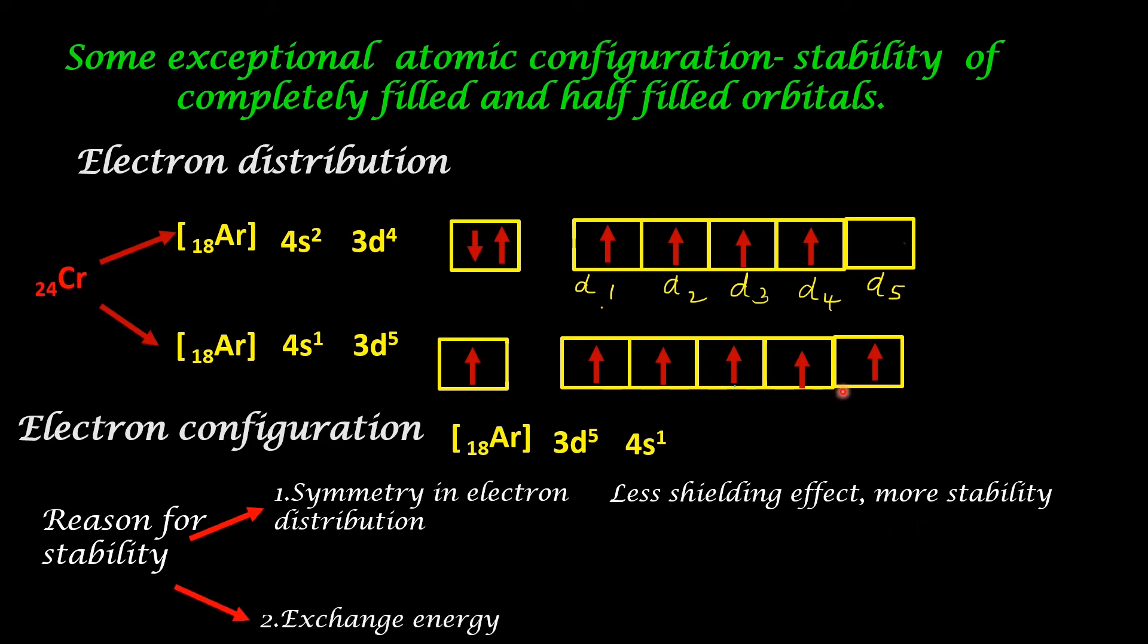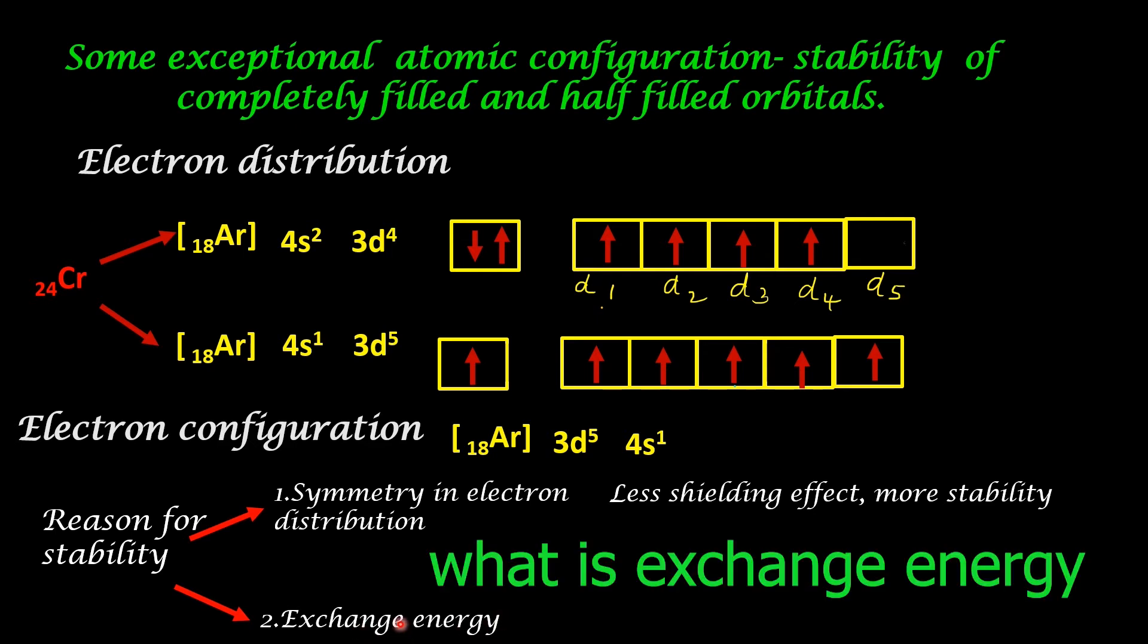Second reason for stability is exchange energy. What is exchange energy? In an atom, electrons are in various orbitals and the various orbitals have their own energy. So electrons have lot of energy and when electrons have lot of energy, they become unstable. So if the electrons can lose some amount of energy, then the atom can become more stable.